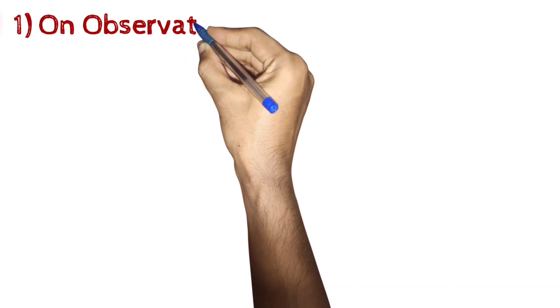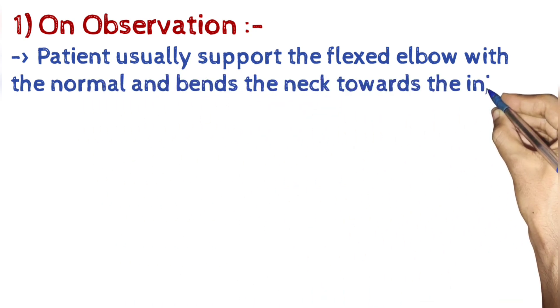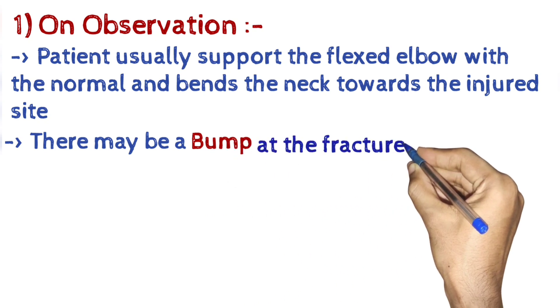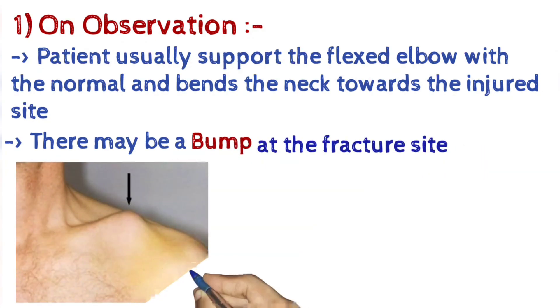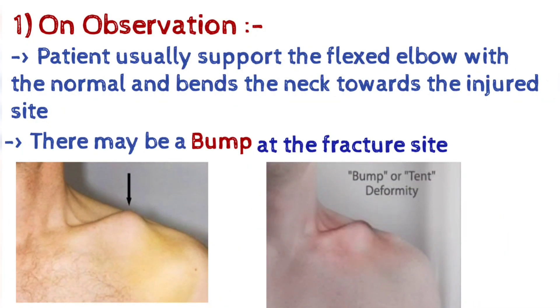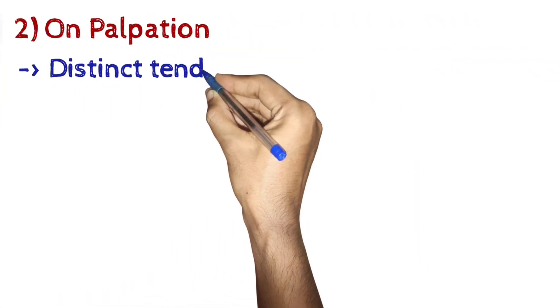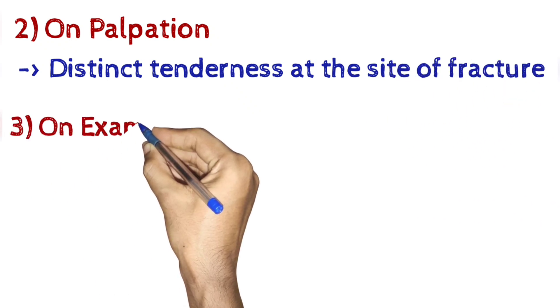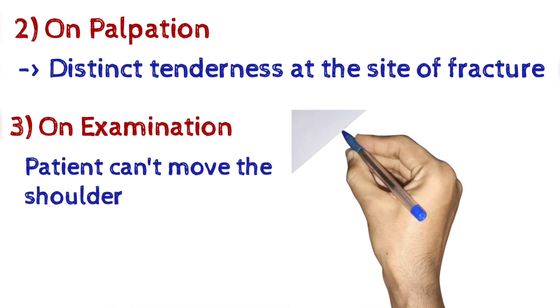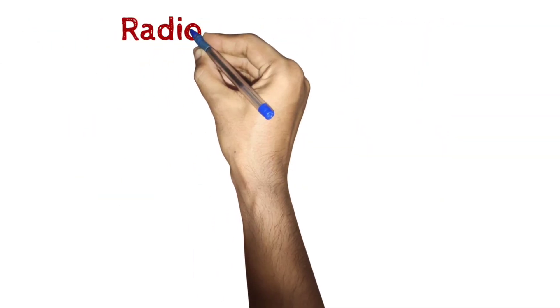Clinical features: 1. On observation, patient usually supports the flexed elbow with the normal hand and bends the neck towards the injured site. There may be a bump at the fracture site. 2. On palpation, distinct tenderness at the site of fracture. 3. On examination, patient can move the shoulder.